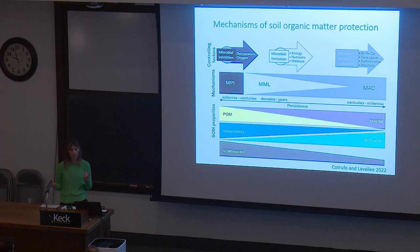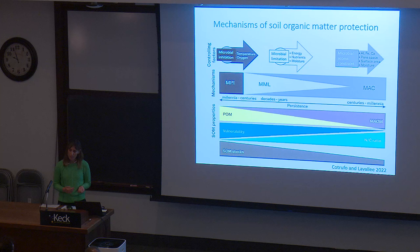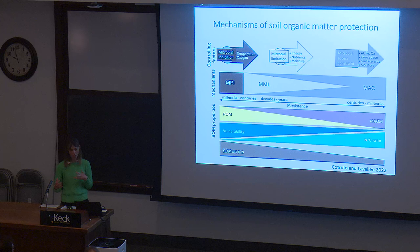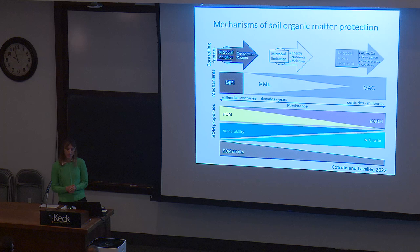On the opposite side, we have microbial access constraints — which is the mineral-associated organic matter creating very fine pore spaces that microbes cannot get into to access and decompose it. This could involve bridging between clay and organic matter provided by calcium, or organometal complexes with aluminum or iron. This is typically a situation with more mineral-associated organic matter, where microbes can break it down to a certain extent, but then it becomes less accessible through association with the minerals.